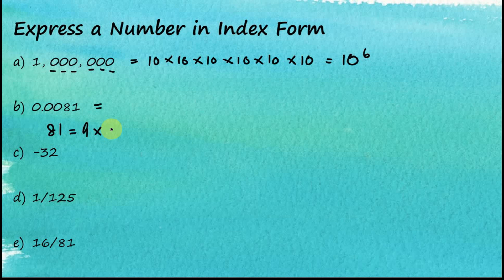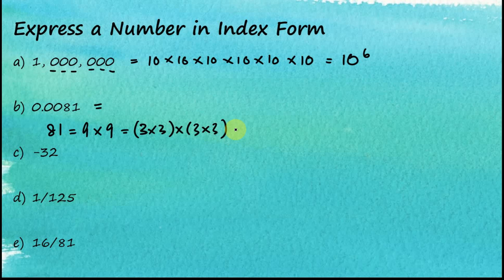Example B: 0.0081. We know that 81 is equal to 9 multiplied by 9, and 9 is equal to 3 times 3. So 3 times 3 times 3 times 3 equals 3 to the power of 4. So 81 equals 3 to the power of 4.